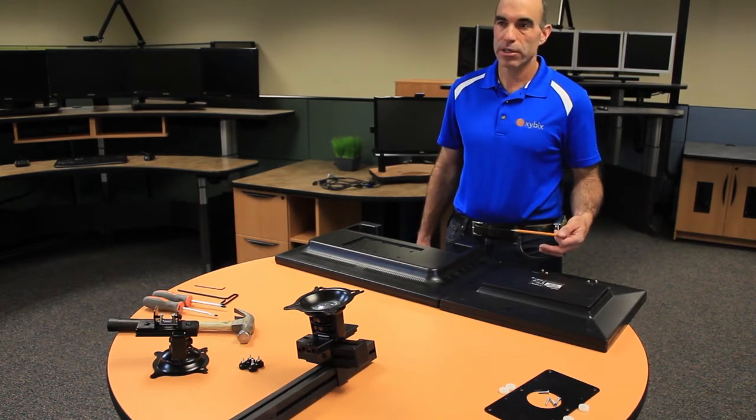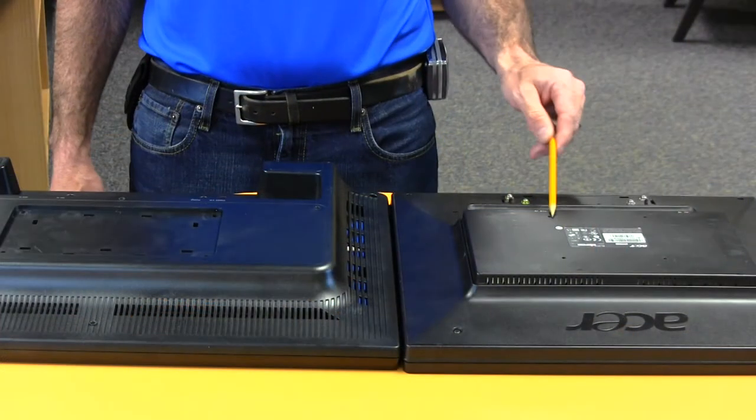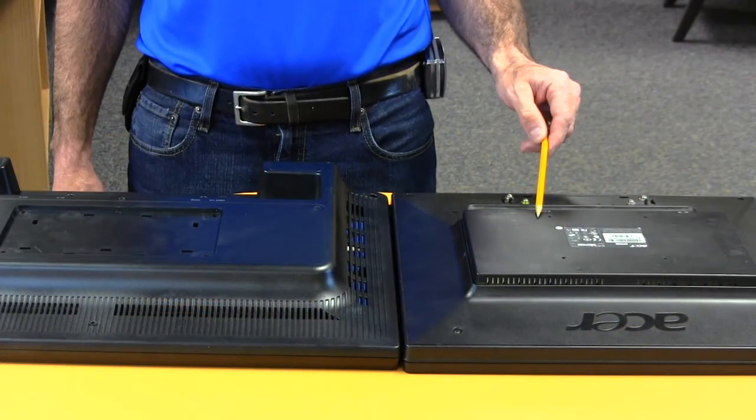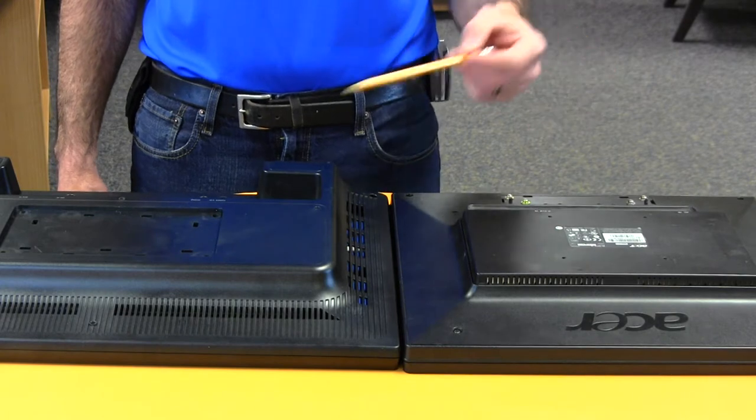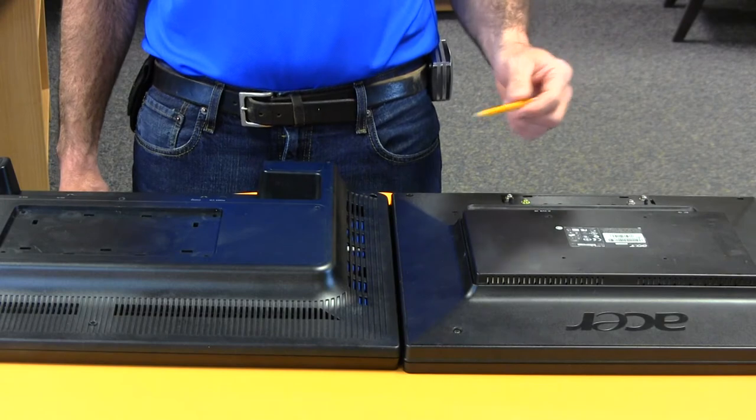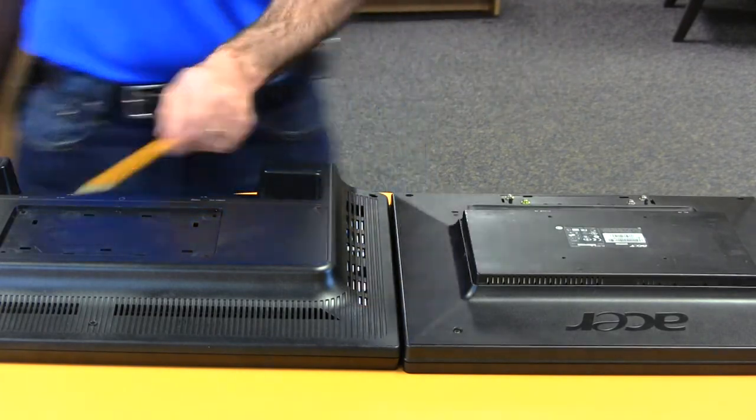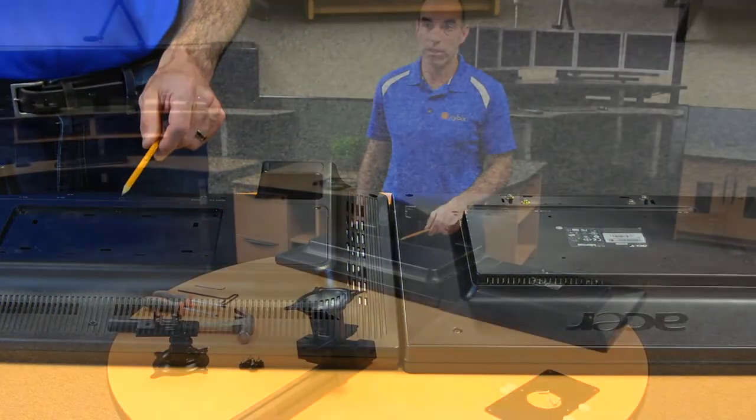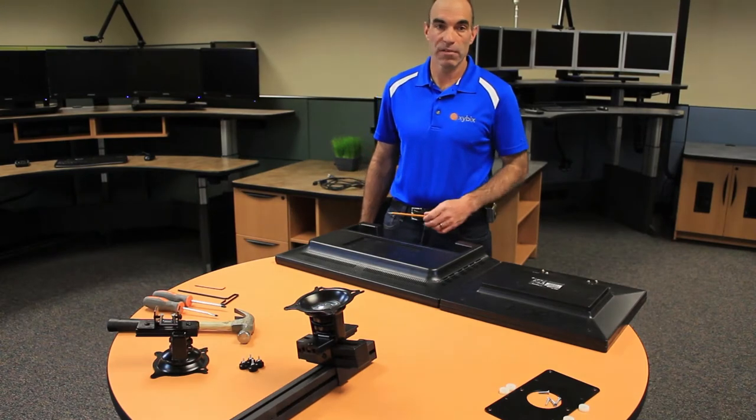Most standard monitors nowadays have a 100 by 100 mounting pattern and that's what our monitor mounts typically have available. But we also offer an adapter plate where we could do a 100 by 200. This is an example of a 100 by 200 or even up to a 200 by 400 mount.